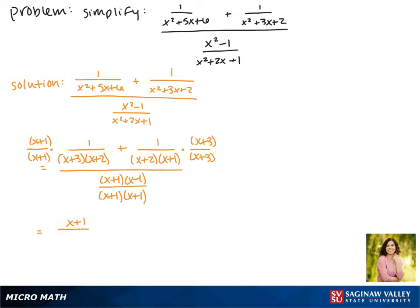Now we get x plus 1 over x plus 1 times x plus 2 times x plus 3 plus x plus 3 over x plus 1 times x plus 2 times x plus 3. And in this step our denominator will stay the same. We have x plus 1 times x minus 1 over x plus 1 times x plus 1.